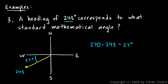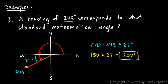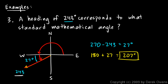So that's 27 degrees below the x-axis, on the west side. The mathematical angle starts here and rotates to that direction. That's 180 degrees for a half circle, plus 27 more to reach the direction. So the answer is 180 plus 27, which is 207 degrees. Notice we subtracted from 270 and then added to 180 — there's no fixed rule; you just think it through each time, and a diagram really helps.